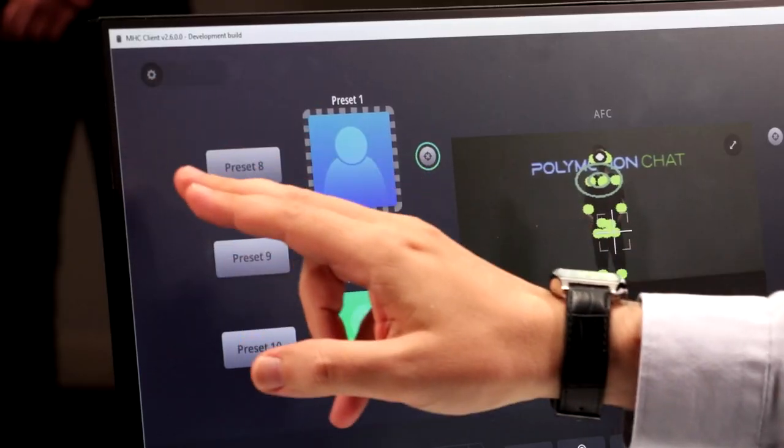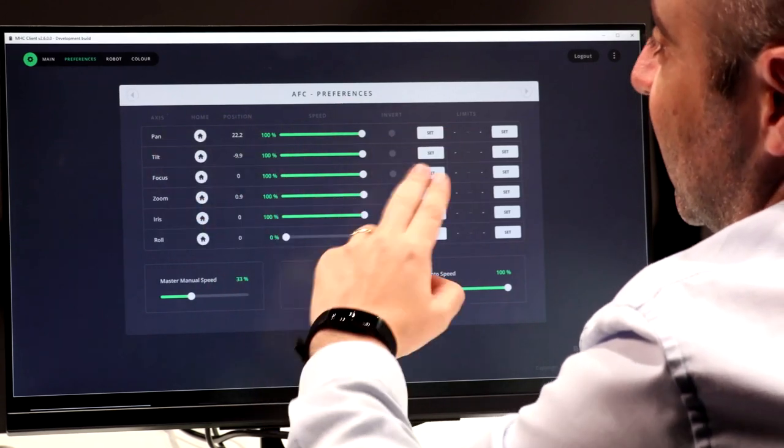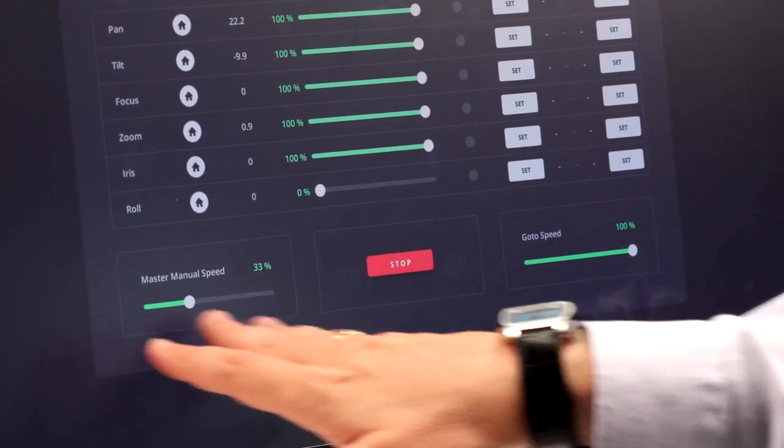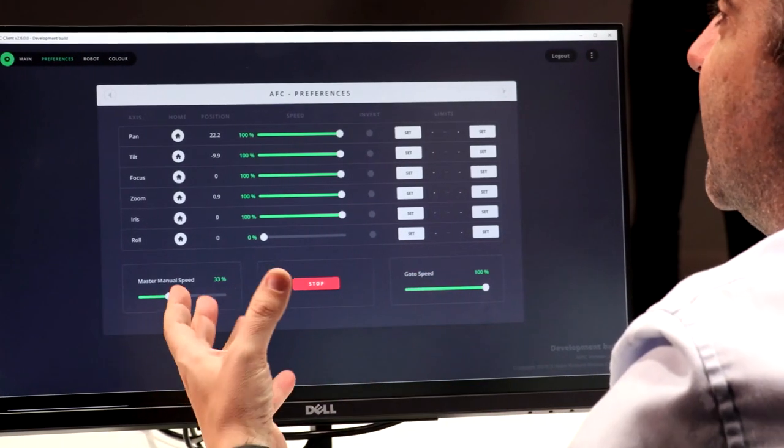You can also go into a more detailed menu. For example, in the preferences menu here, you can individually control the speed of the pan, the tilt, the focus, the zoom, the iris, and the roll. Then you've even got a master control there. Your go-to speed defines how quickly those presets will click in.